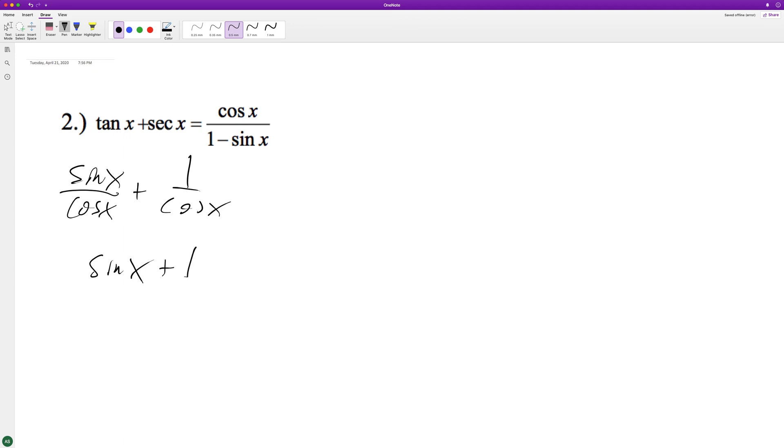What we can do here on top is we can multiply top and bottom by 1 minus sine of x, so we get 1 minus sine squared of x over cosine of x times 1 minus sine squared of x.